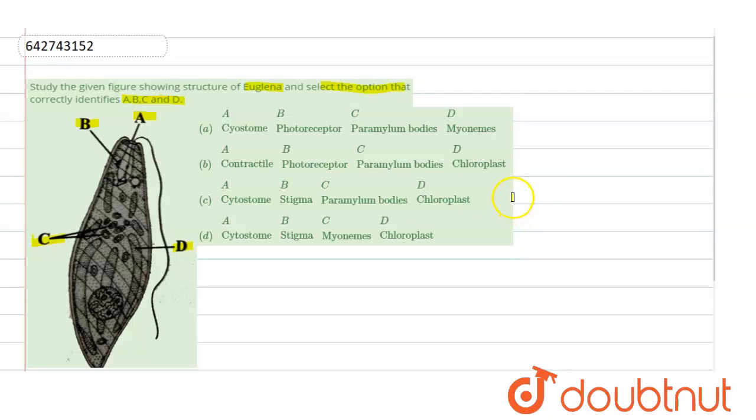Then is cytostome, stigma, paramylum bodies and chloroplast. Then is cytostome, stigma, myonemes and chloroplast. So we have to find out the correct option, correct sequence.